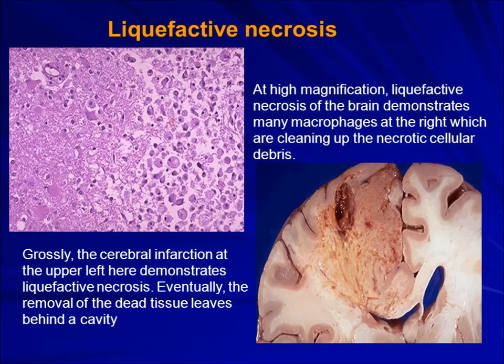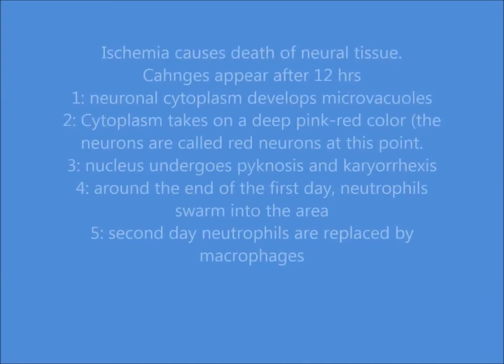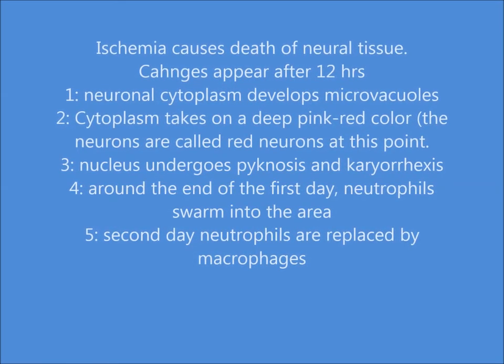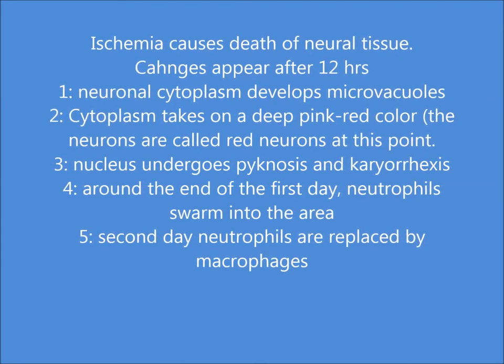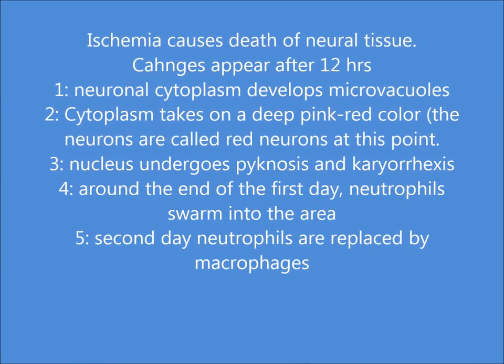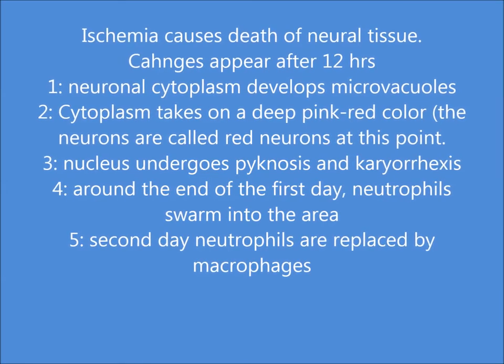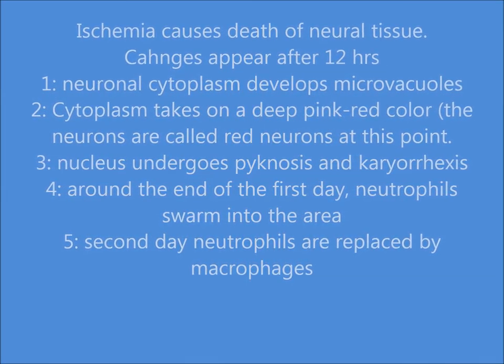Now gross and microscopic views are shown in the same picture. To summarize the findings: ischemia causes death of neuronal tissue, and changes appear after 12 hours. Neuronal cytoplasm develops micro vacuoles, there are pink-red neurons, nuclei undergo pycnosis, there are neutrophils, and then neutrophils are replaced by foamy macrophages.